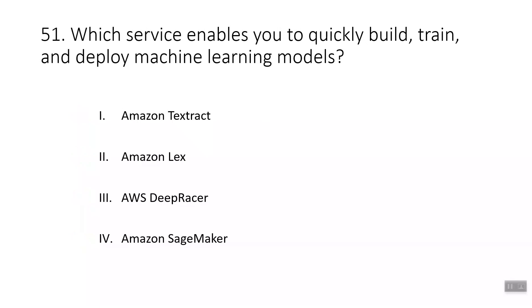Question fifty-one: which service enables you to quickly build, train, and deploy machine learning models? The correct answer is Amazon SageMaker, which lets you quickly begin working on machine learning projects. Amazon Textract is a machine learning service that automatically extracts text from scanned documents. Amazon Lex enables you to build conversational interfaces using voice and text. Amazon DeepRacer is a 1/18 scale race car used to test reinforcement learning models.